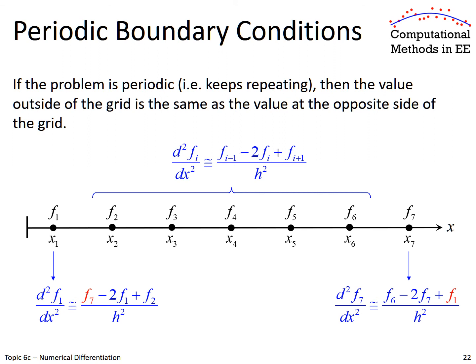Very often in science and engineering we want to simulate periodic structures — folks use these to make things invisible, do negative refraction, a lot of cool stuff. If our simulation is periodic and we're calculating our finite difference at F1 and need to access F0, then F0 will have the same value as F7 — so we just use F7 instead. Likewise, at the other edge, if we need F8, we use F1 in its place. This is how we incorporate periodic boundary conditions, and it's used all the time.